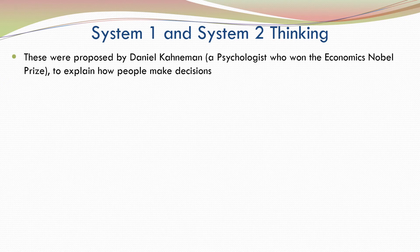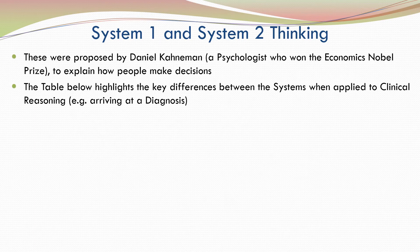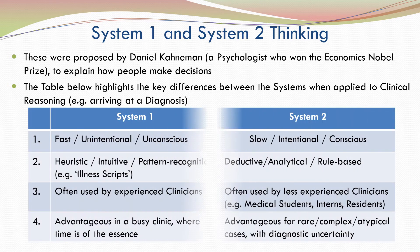System 1 and system 2 thinking were proposed by Daniel Kahneman, a psychologist who won the Economics Nobel Prize, to explain how people make decisions. The table below highlights the key differences between the systems when applied to clinical reasoning — for example, while arriving at a diagnosis. Those who are interested can pause and note down the details. It is important to realize that the same individual can use both system 1 and system 2 as per the requirements of the situation.